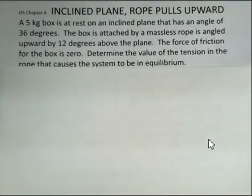In this example problem, we have a ramp, an incline plane. We have a box of 5 kilograms. The angle of the ramp compared to the horizontal is 36 degrees. And we have a massless rope on the upward side of the box, angled 12 degrees above the slope of the plane.